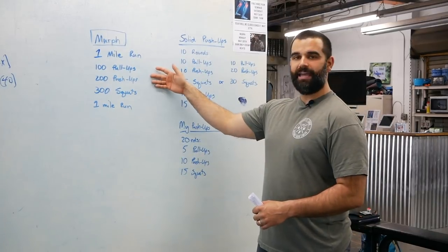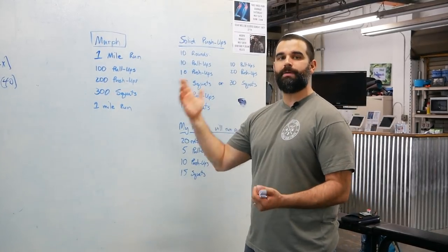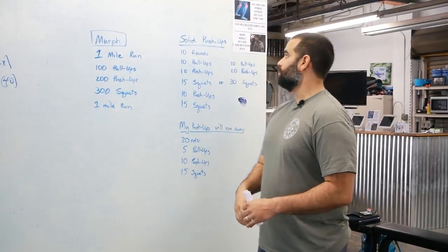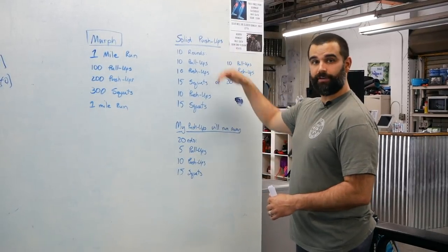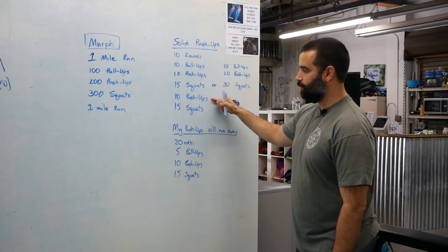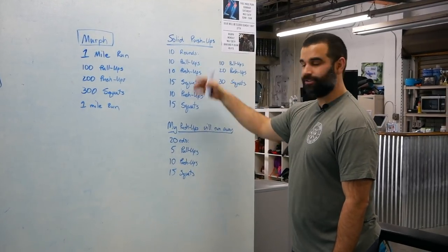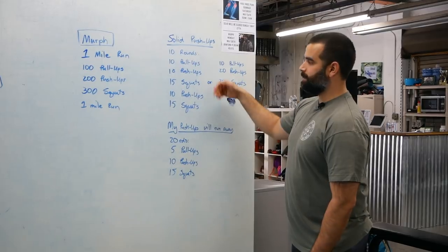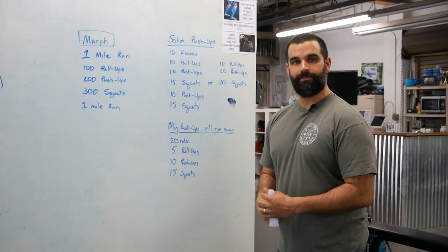There is some talk about having to do it straight through to count, but it's always been posted as you can partition it. If you're someone where you have solid push-ups, you have a couple choices. You can go 10 rounds of 10 pull-ups, 10 push-ups, 15 squats, 10 push-ups, 15 squats. I personally like this because it breaks up the push-ups a little bit so you can stay unbroken on them for as long as possible.